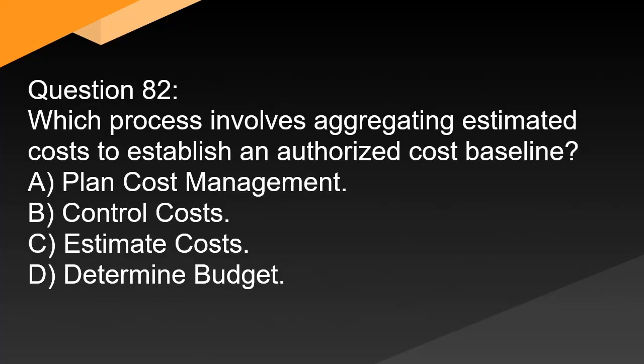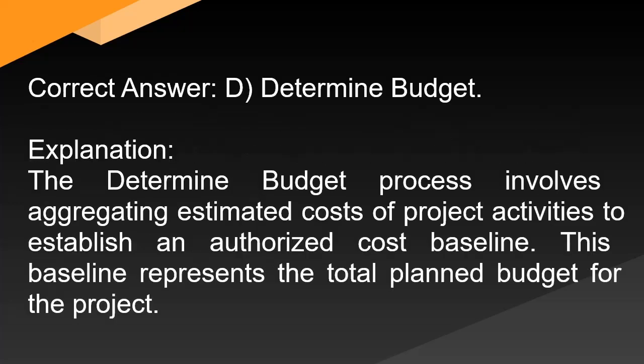Question 82: Which process involves aggregating estimated costs to establish an authorized cost baseline? A. Plan cost management. B. Control costs. C. Estimate costs. D. Determine budget. Correct answer: D. Determine budget. Explanation: The determine budget process involves aggregating estimated costs of project activities to establish an authorized cost baseline. This baseline represents the total planned budget for the project.